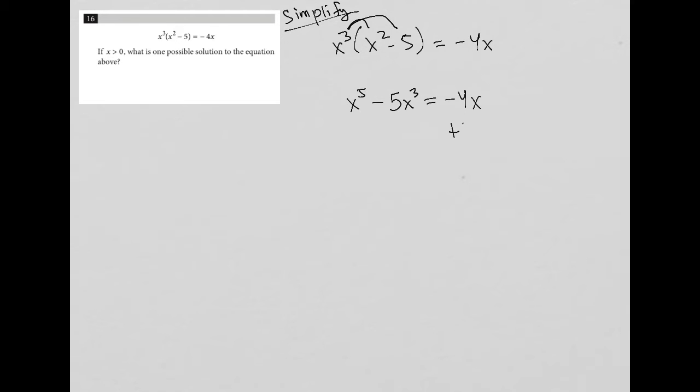I then add 4x to both sides just because I want all my x terms together. So I'd have x to the fifth power minus 5x to the third power plus 4x is equal to 0.